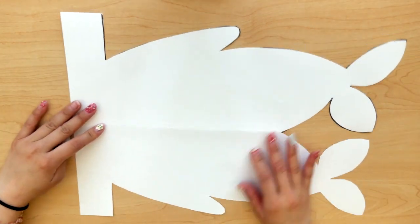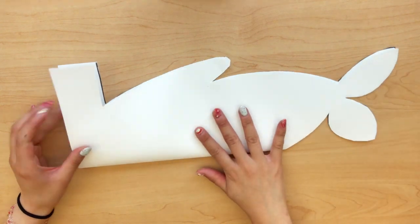Once you have that done, you're going to go ahead and take your fish, open it all the way up, and flip it so that all the lines that we drew are hidden on the inside.